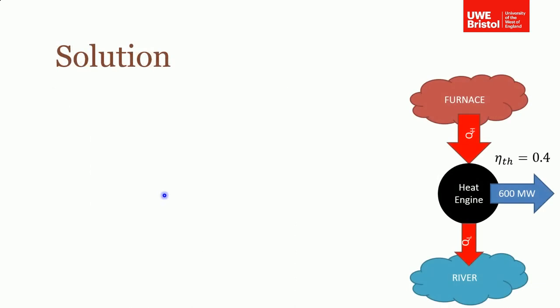How do you do this? First of all, draw a sketch. Always draw a sketch. We've got our heat source, which is a furnace, our heat sink, which is a river. We're supplying heat to our heat engine and rejecting heat to the river. This is what we're trying to work out: QL. You're told it's a 600 megawatt plant, so that's the net work done by the heat engine, and the thermal efficiency is 0.4 or 40%.